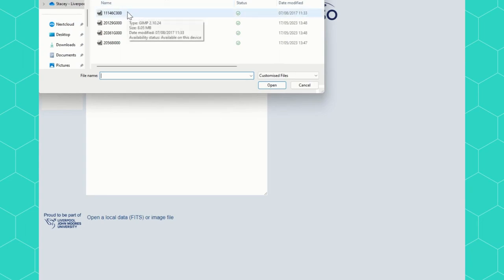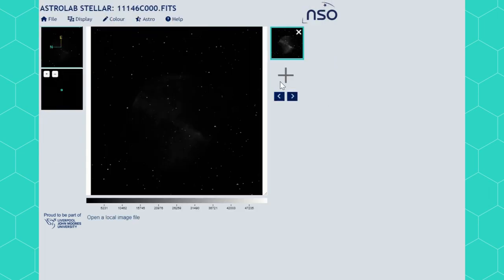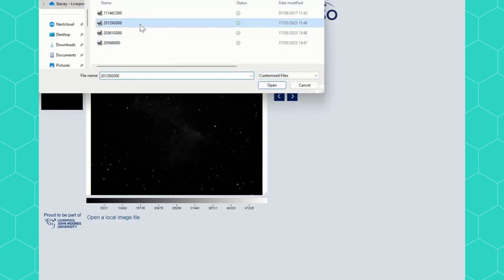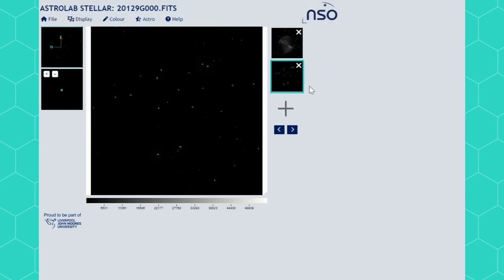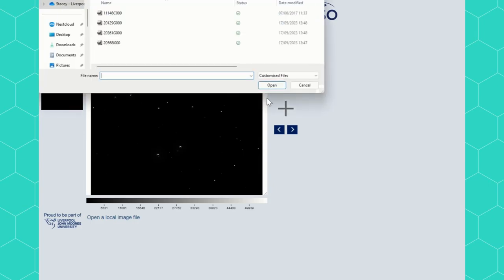This method is especially useful if you want to open multiple images to compare the brightness of an object over time. You can simply use the plus sign to open each one in turn or do a multiple select to open them all at once.